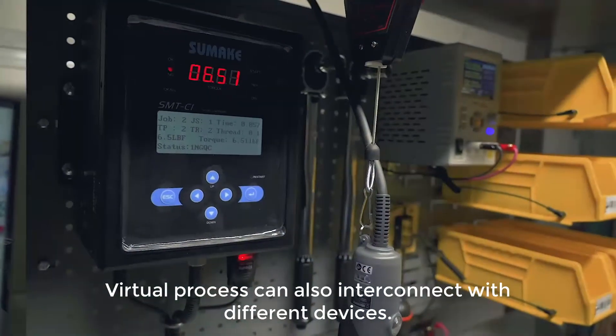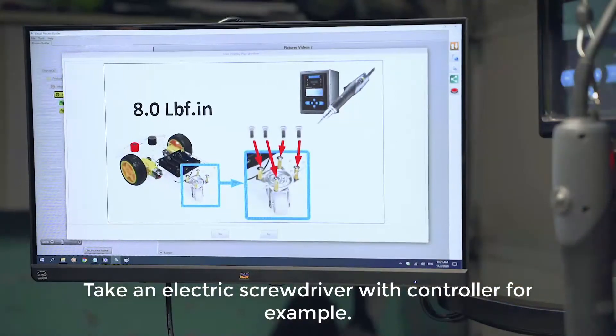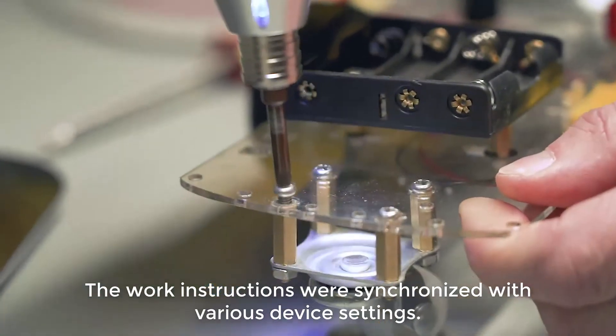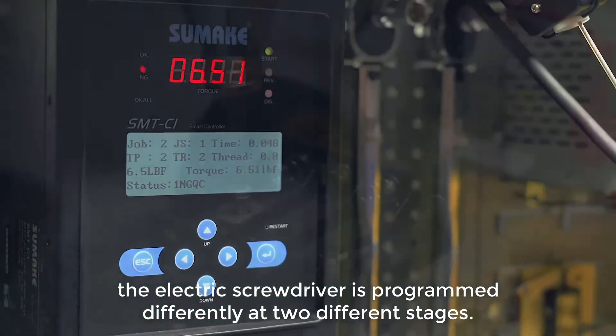Virtual Process can also interconnect with different devices. Take an electric screwdriver with controller, for example. The work instructions are synchronized with various device settings. As in the following example, the electric screwdriver is programmed differently at two different stages.